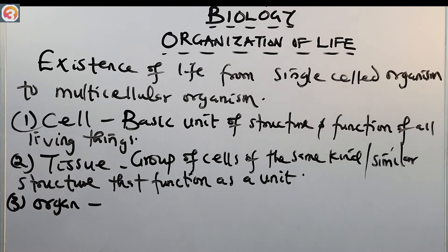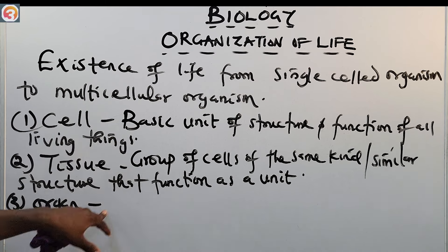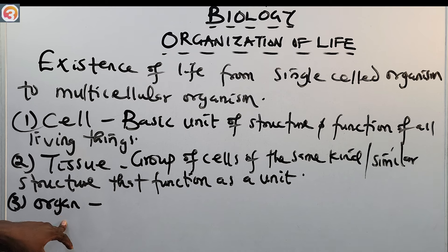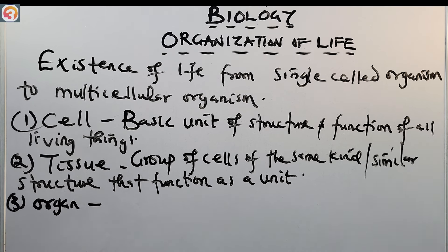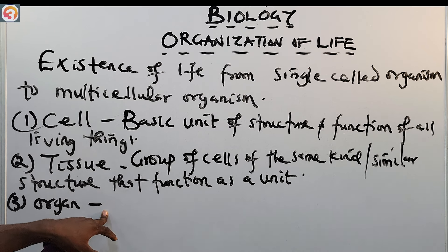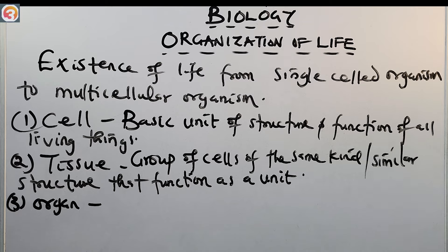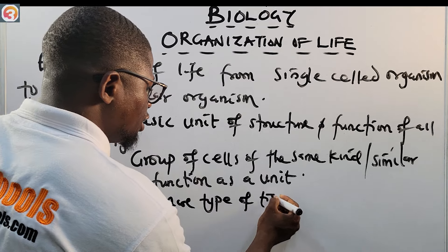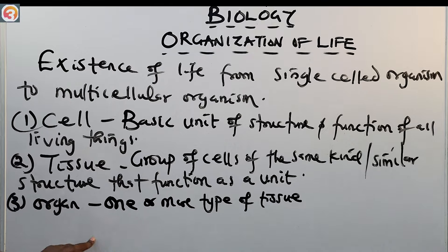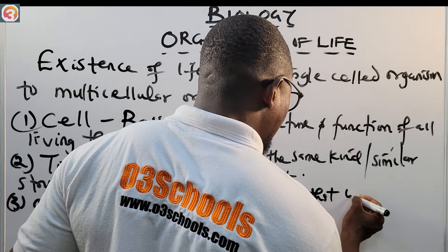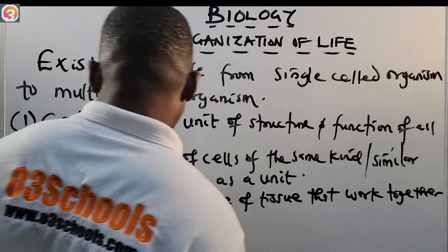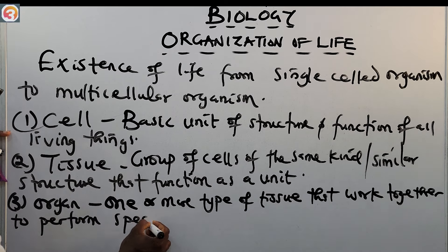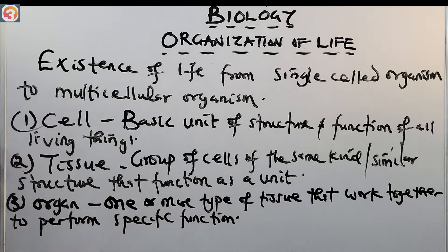The third level is the organ. An organ is composed of one or more types of tissues that work together to perform a specific function. So: cells make up tissue, and tissues make up organs.